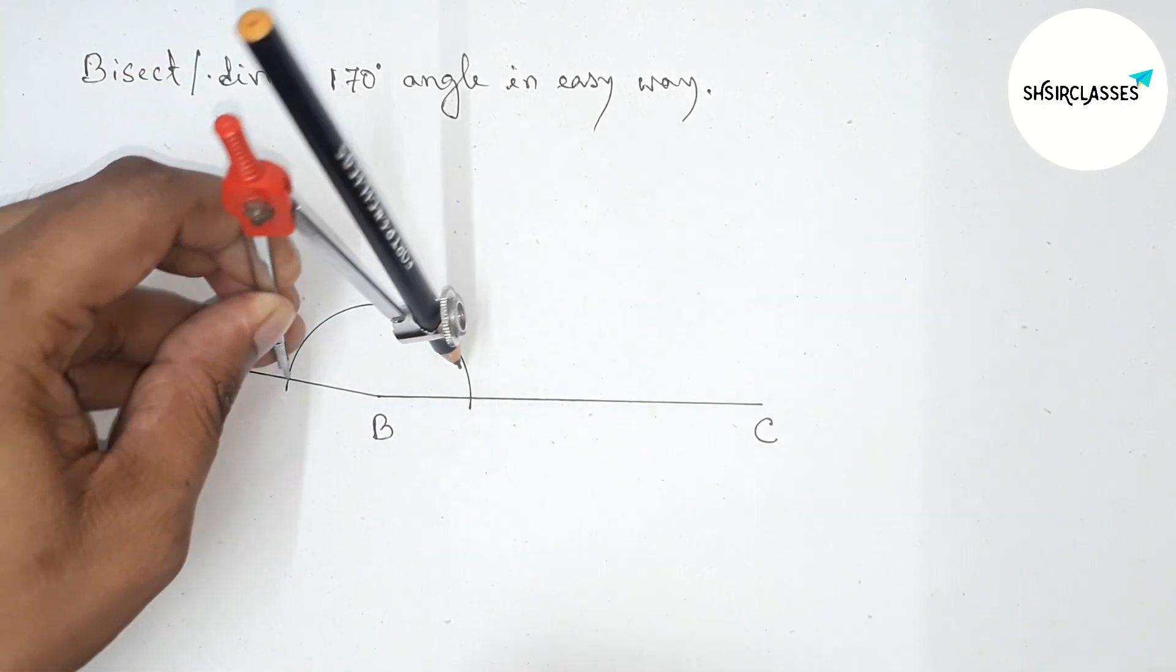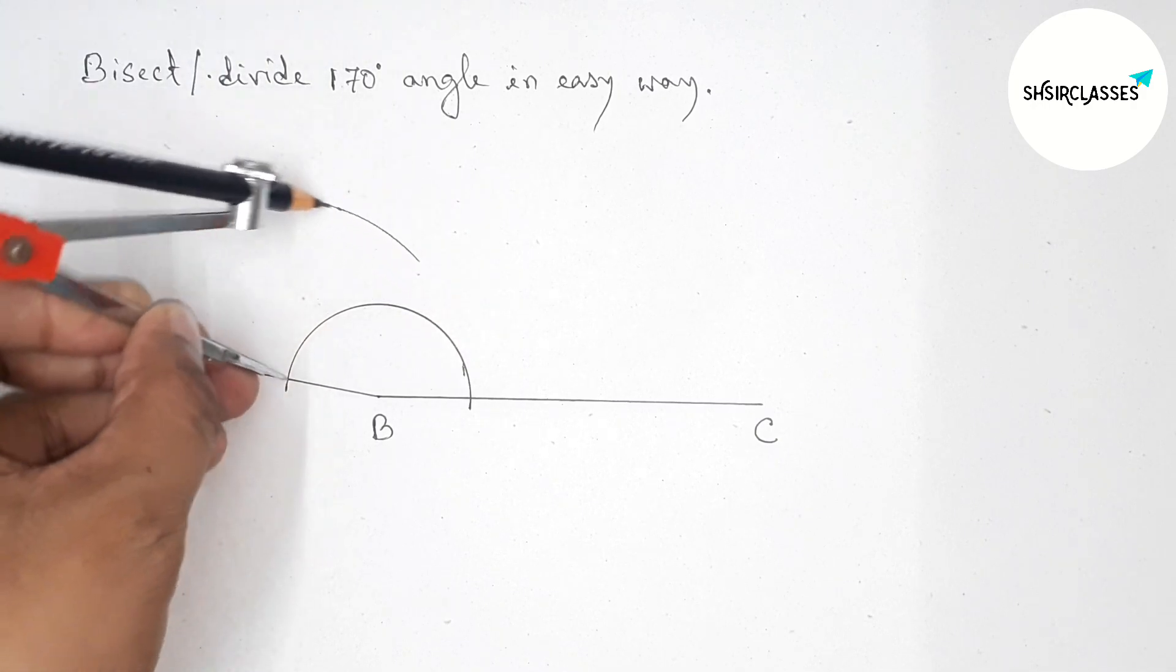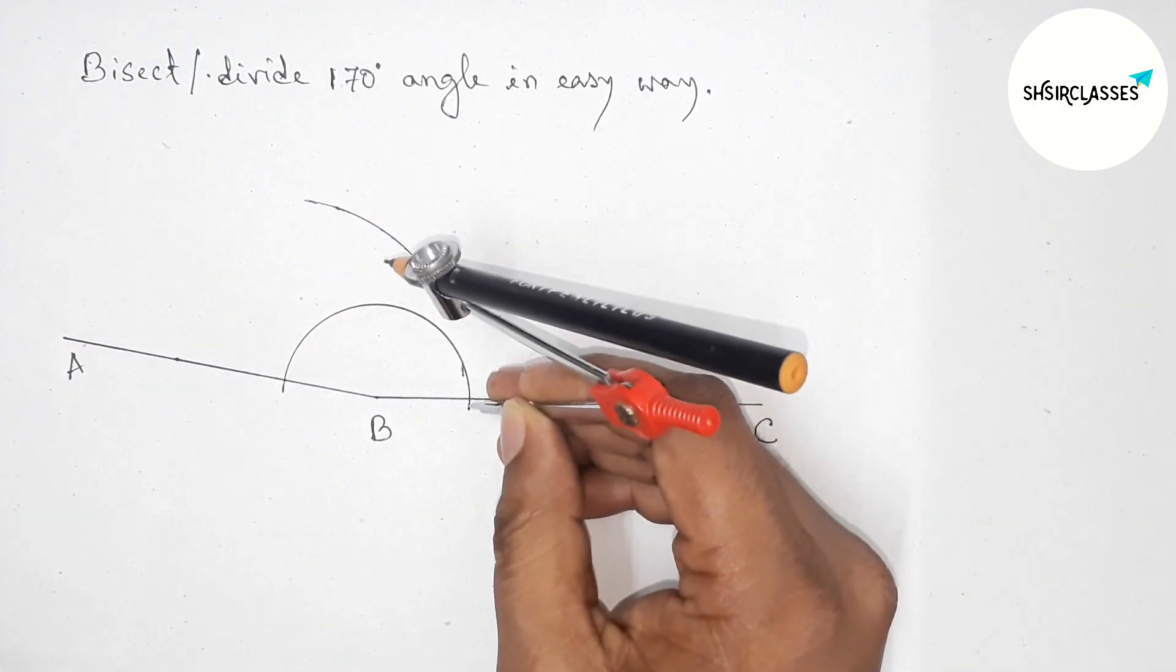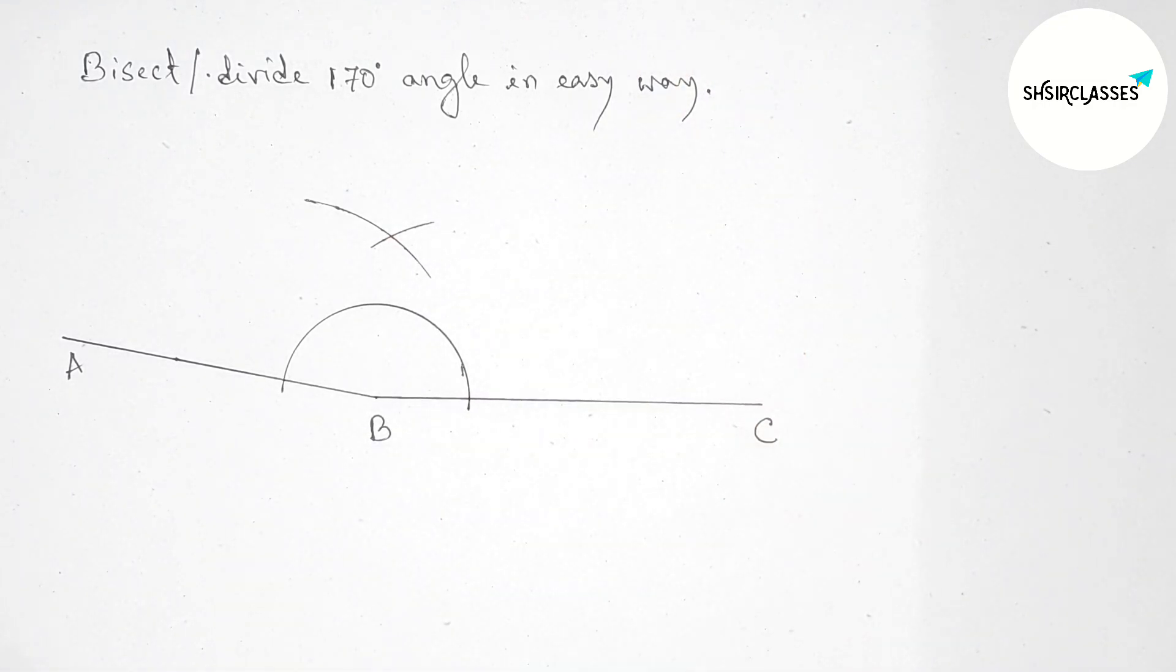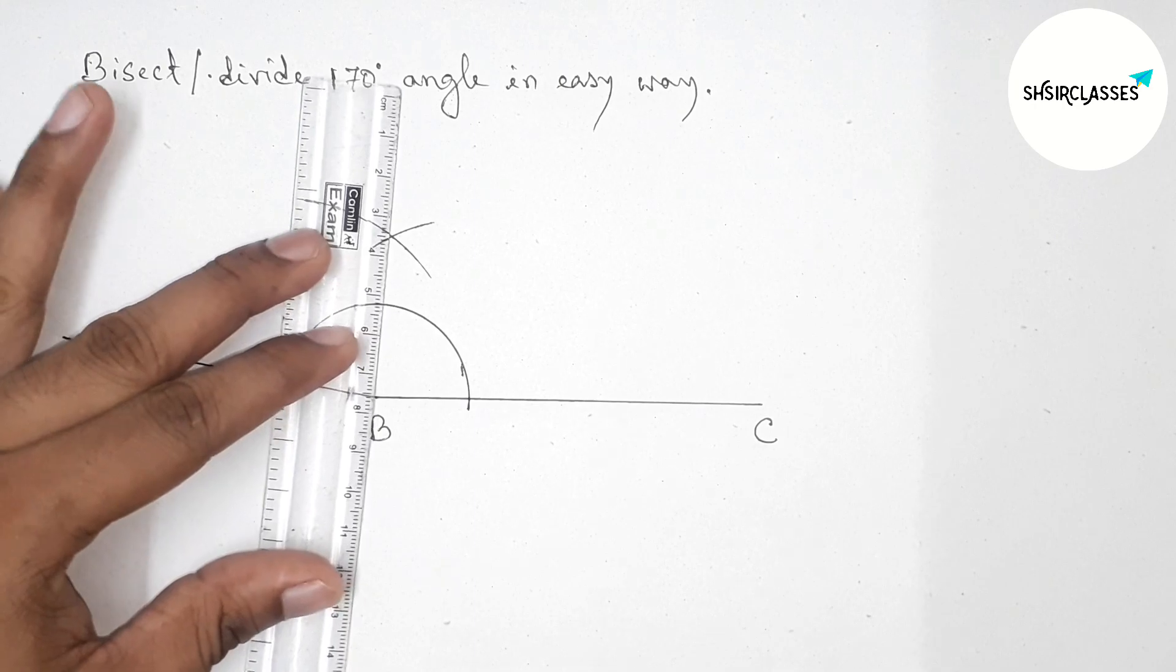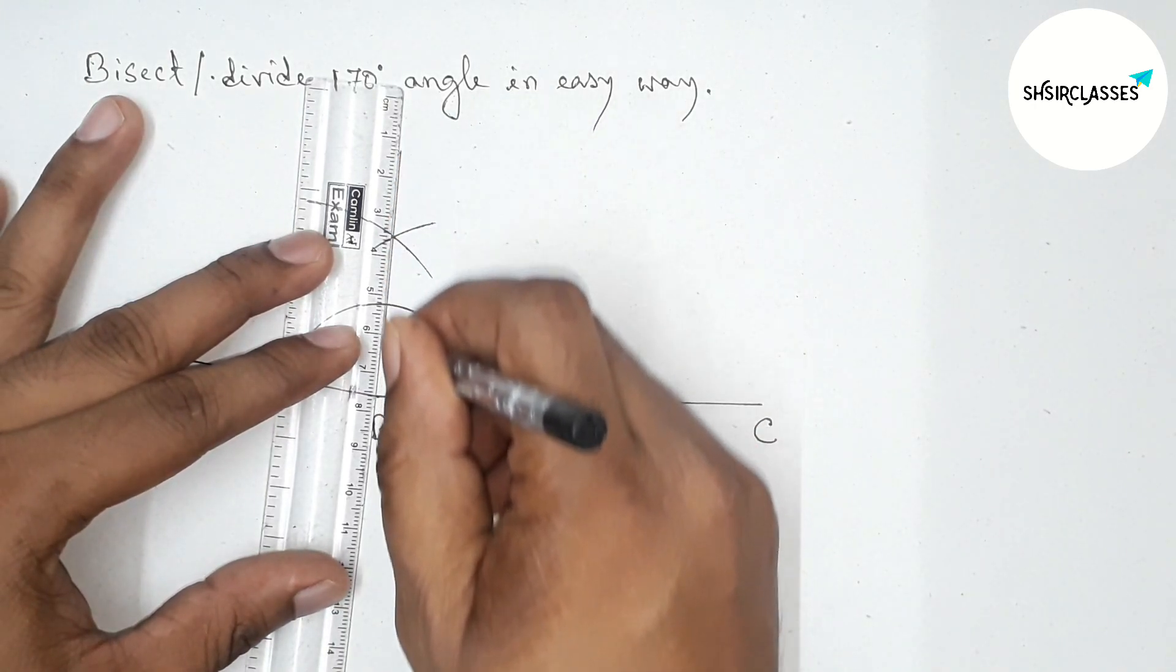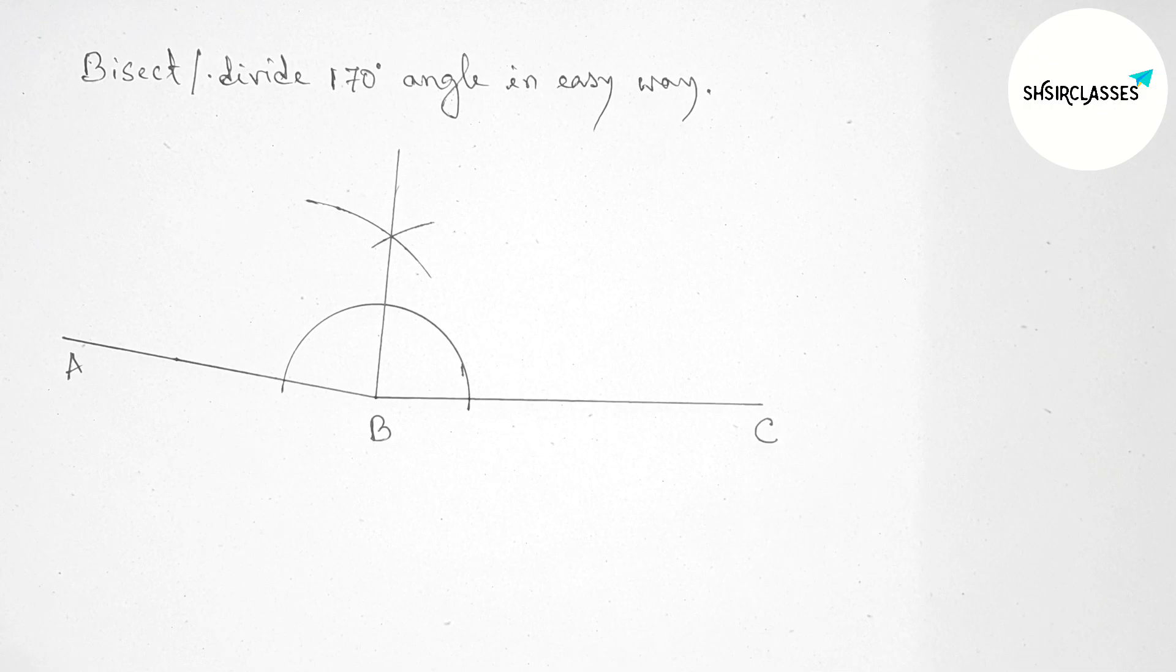Taking a length greater than half of this and drawing an arc here. Again with the same length, putting the compass here and cutting here. Now joining this line which bisects angle ABC.